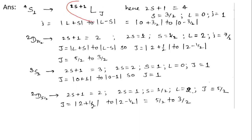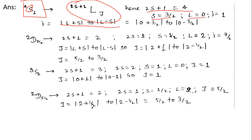For the first term symbol 4S1: here 2S+1 = 4, so S = 3/2. For S state, L = 0, so J ranges from L+S to |L−S|, which is 0 + 3/2 to 0 − 3/2, meaning J should be 3/2. But J given is 1, so this term symbol is NOT possible.